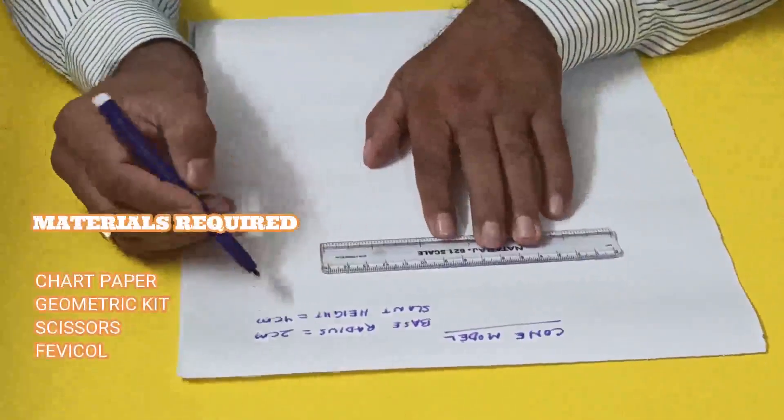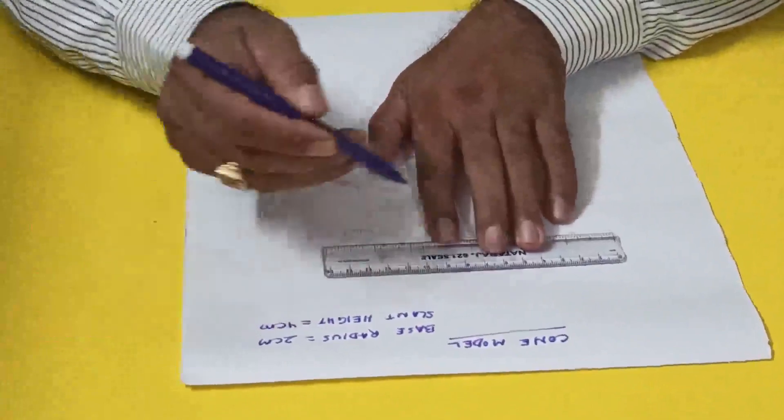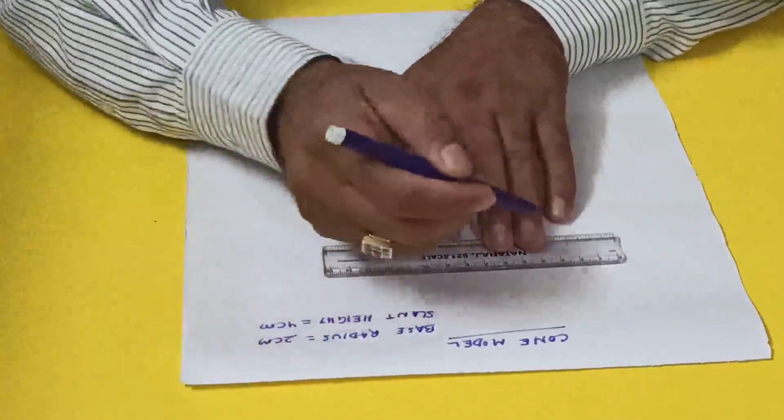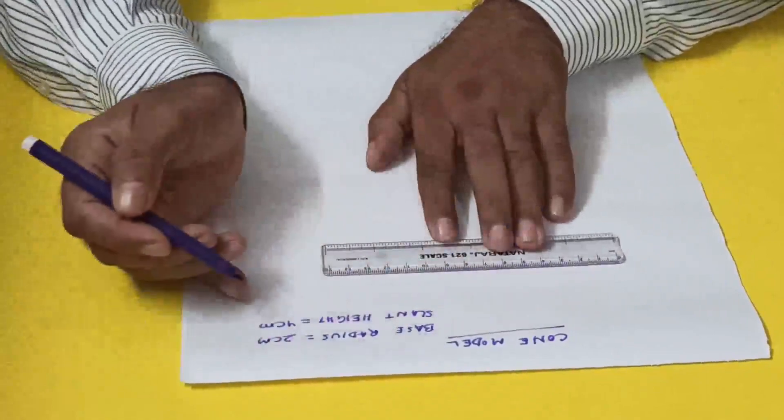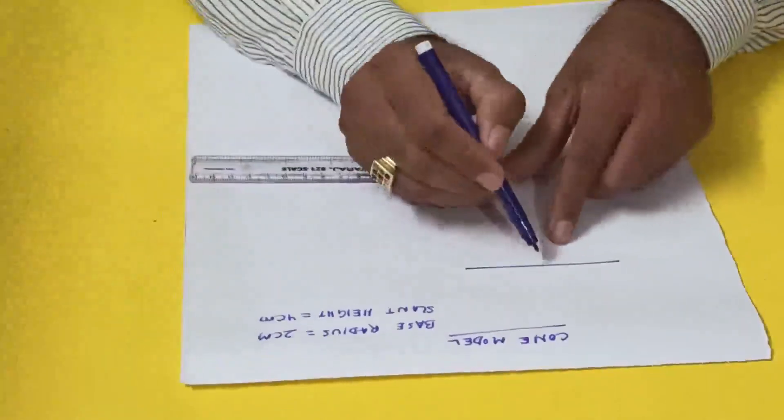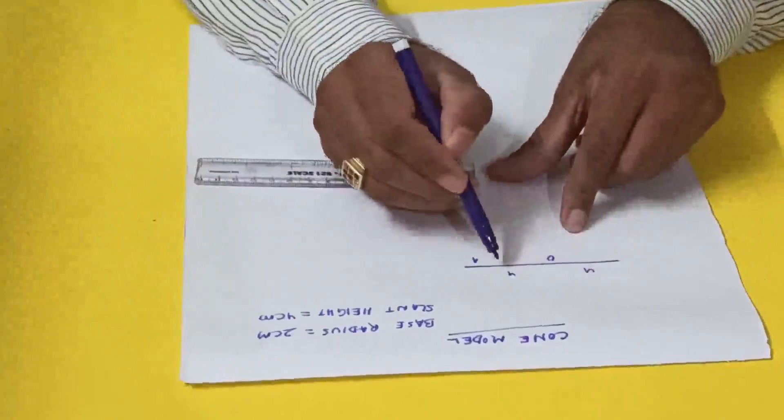The radius is 4, so we can take directly twice the radius, which is 8 centimeters for the diameter. So OA is 4 centimeters - this one is 4 and this one is 4.